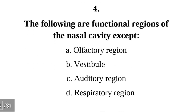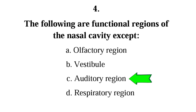Number 4. The following are functional regions of the nasal cavity except: olfactory region, vestibule, auditory region, respiratory region. The correct answer is C, auditory region. The auditory region is not a functional region of the nasal cavity. The functional regions of the nasal cavity are the vestibule, respiratory region, and olfactory region.